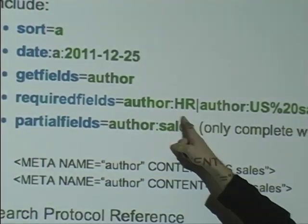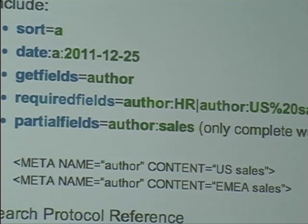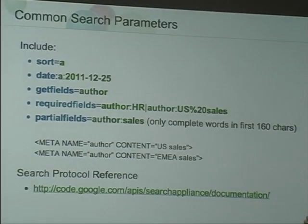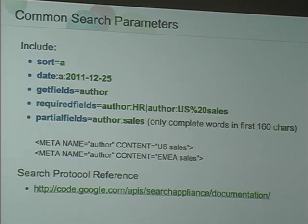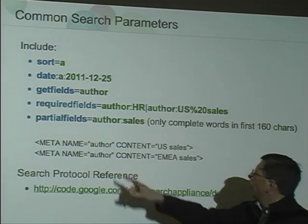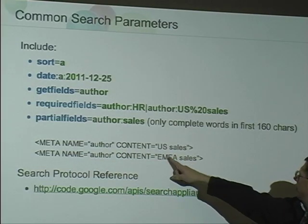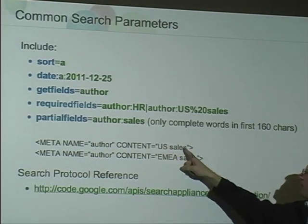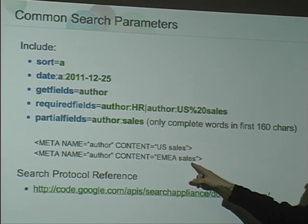Partial fields will search for a word in the metadata, and if it appears anywhere it's like a keyword search — it'll select that field. It only looks for complete words. So in this case, the partial fields match will match both of these meta tag fields.